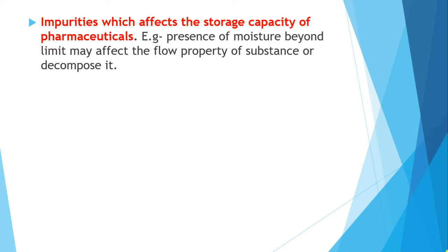Flow property means, for example, imagine water in a glass and bottle in front of you. If impurities such as dust particles are present, and if they are beyond the prescribed limits, they affect the flow property of the substance. It may also lead to decomposition, meaning the active constituents after storage undergo decomposition.